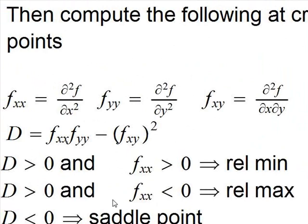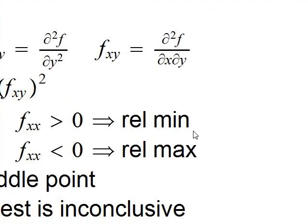Remember, you have done these questions by hand. If d is greater than zero and the second derivative with respect to x at that point is greater than zero, then we have a relative minimum, et cetera. You can easily recall that.